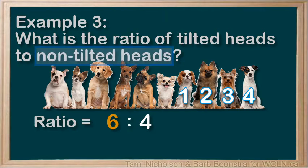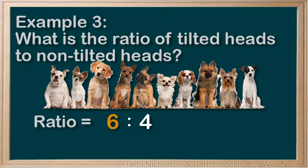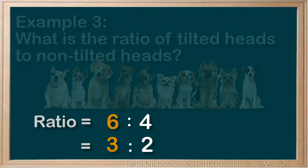Can we simplify or reduce this ratio? Is there a number that we can divide both 6 and 4 by? Yes — they are both divisible by 2. So let's reduce: we'll divide both sides by 2. 6 divided by 2 is 3, and 4 divided by 2 is 2. So the reduced version of our ratio is 3 to 2.